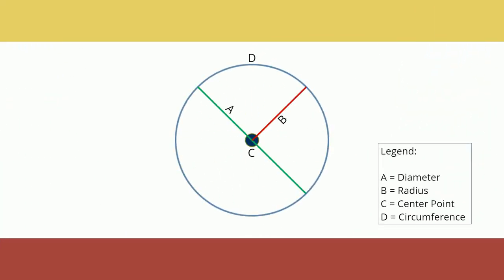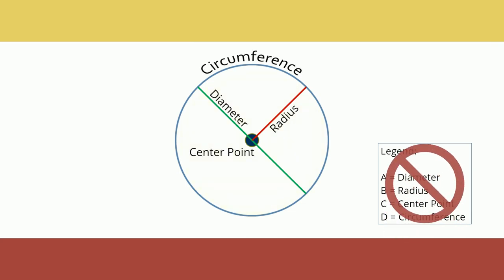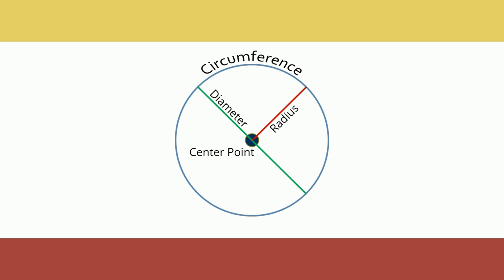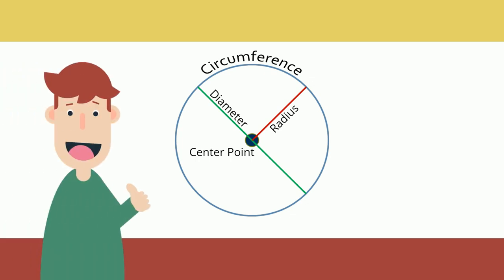Start by placing graphic information on the graphic itself, instead of in a legend. In this image about the parts of a circle, it's easier for the learner to remember the parts when they're superimposed over the image, instead of labeled and then explained in a key.